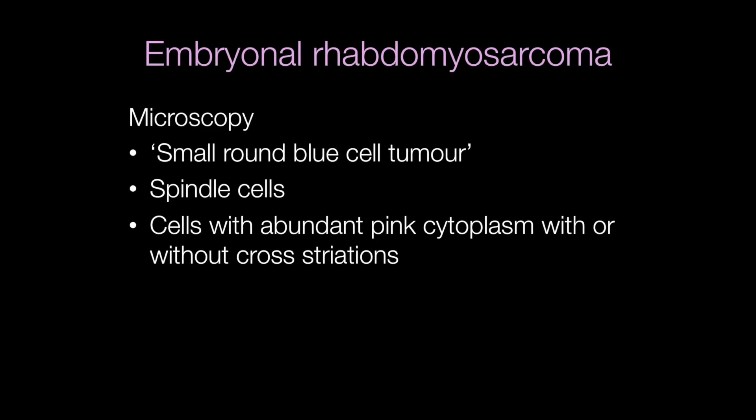Embryonal rhabdomyosarcoma is a type of small round blue cell tumour of childhood. Other examples include neuroblastoma, medulloblastoma, and lymphoblastoma. Although this describes the typical cell seen in embryonal rhabdomyosarcoma, other cell types include spindle cells and sometimes cells with more abundant pink cytoplasm that may or may not contain cross striations.